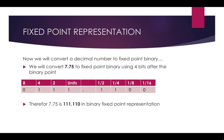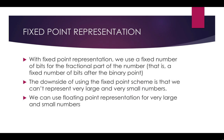Therefore, 7.75 is 111.1100 in binary fixed point representation using four bits for the fractional part. That's basically how to represent decimal numbers in fixed point binary, and we looked at how to convert a binary fixed point number back into decimal format.